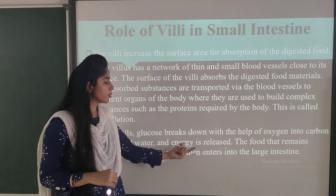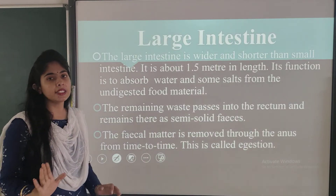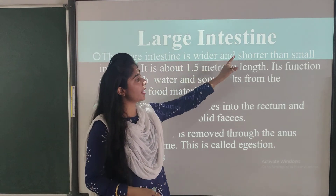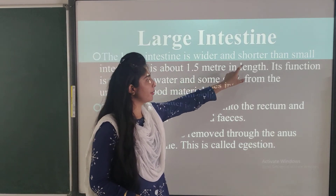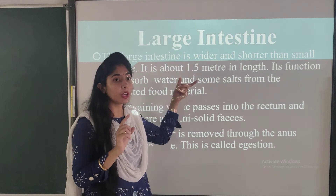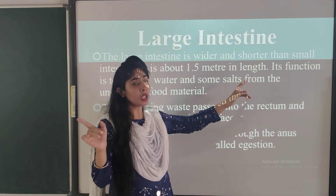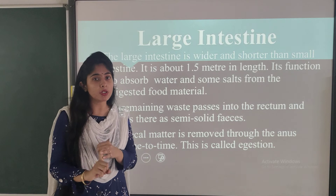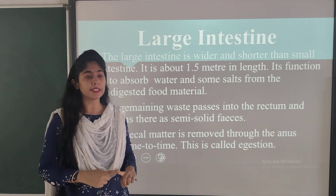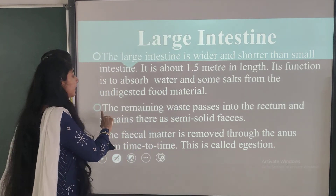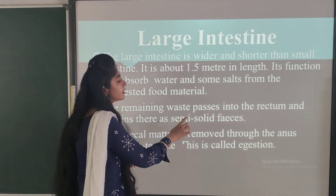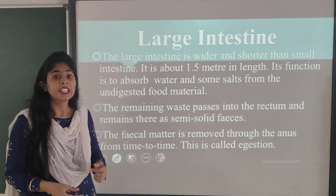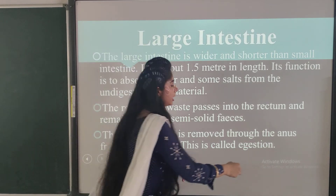The food that remains undigested and unabsorbed enters into the large intestine. The large intestine is wider and shorter than the small intestine — it is about 1.5 meters in length. Its function is to absorb water and some salts from the undigested food material. The remaining waste passes into the rectum and remains there in semi-solid form. The fecal matter is removed through the anus from time to time — this is called egestion. Ingestion means food coming inside the body, and egestion means exit of the undigested food.